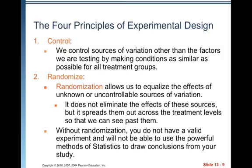There are four basic principles of experimental design. The first is control: we control sources of variation other than the factors we are testing by making conditions as similar as possible for all treatment groups. The second is randomization: randomization allows us to equalize the effects of unknown or uncontrollable sources of variation. It doesn't eliminate these effects, but spreads them across treatment levels. Without randomization, you do not have a valid experiment and cannot show a cause and effect relationship.